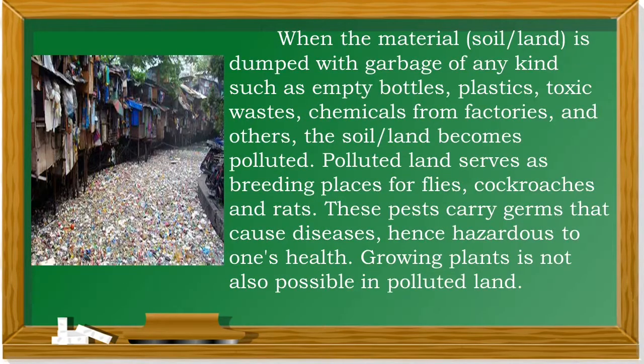When the soil or land is dumped with garbage of any kind — such as empty bottles, plastics, toxic waste, chemicals from factories, and others — the soil and land become polluted. Polluted land serves as a breeding place for flies, cockroaches, and rats. These pests carry germs that cause diseases, hence hazardous to one's health. Growing plants is also not possible in polluted land.